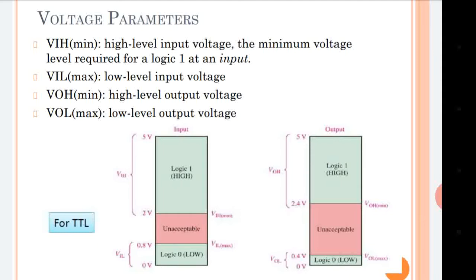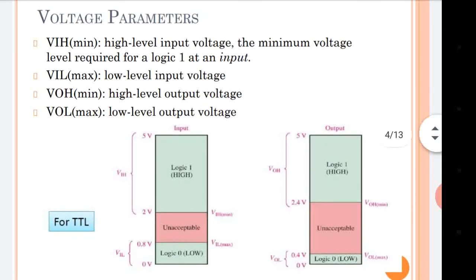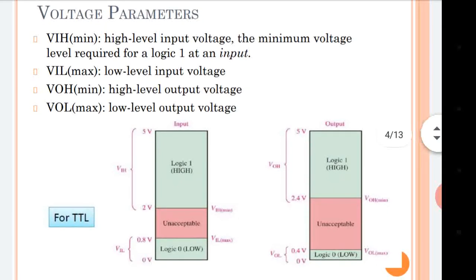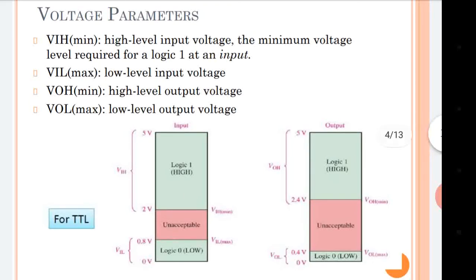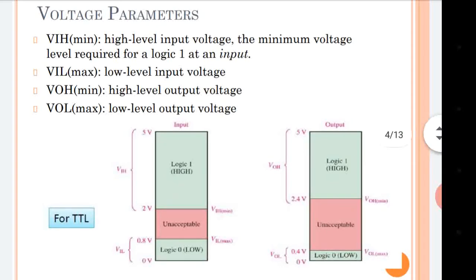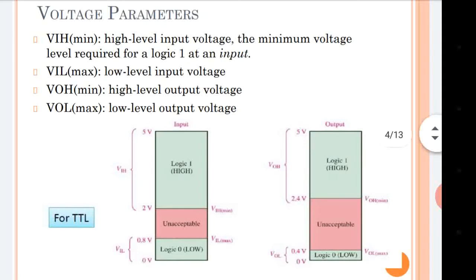VIH min: VI stands for input voltage, H is for the high value, and minimum indicates this is the minimum value of the high band, which is 2 volt in the diagram. VIH min is the minimum value of the high level input voltage which is considered as logic high. Any value given less than 2 volt is not considered as logic 1.